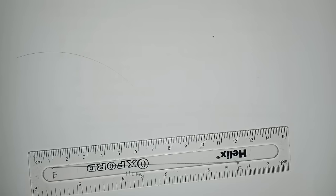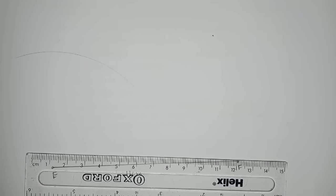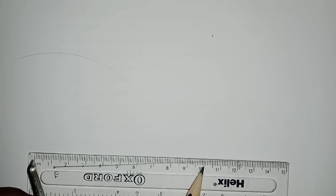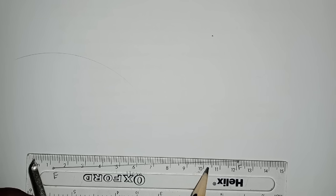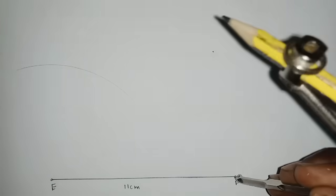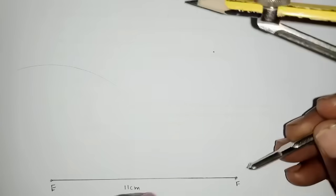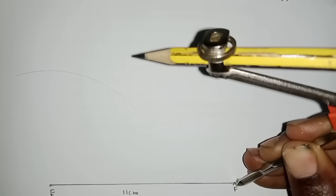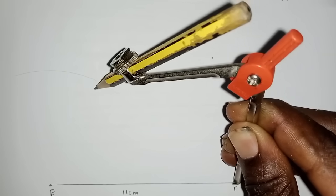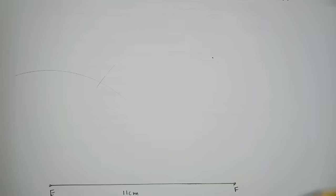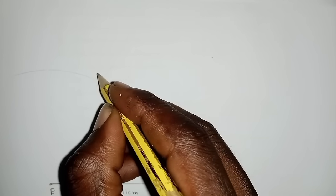Then GF is 10 centimeters. Use the same ruler and measure 10 — zero is over here, 10 is right here. You also go to point F, which is right here, and bisect an arc. Where the two arcs are meeting — that is the needed point which is G.